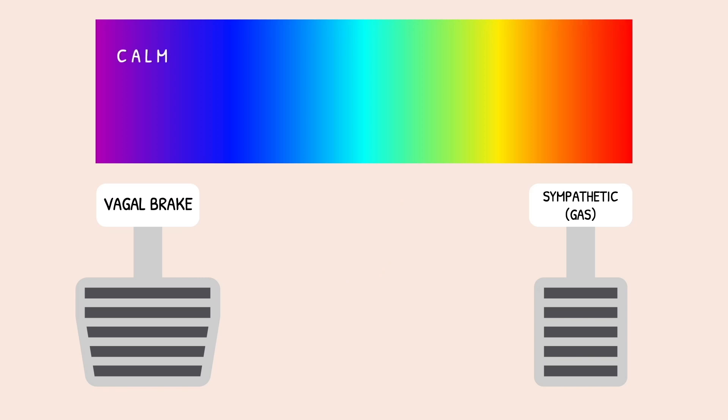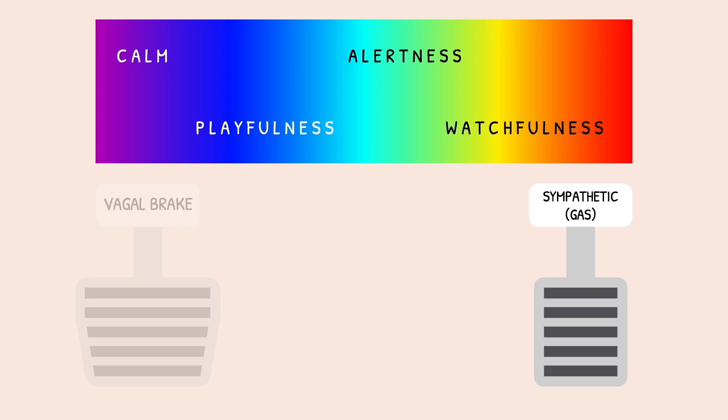When the vagal brake is working well, you can move through a spectrum of feelings like calm, playfulness, alertness, or watchfulness, all without losing that underlying sense of safety. But without the vagal brake, that grounding in safety and connection is gone, and the nervous system shifts more easily into protective fight or flight responses.